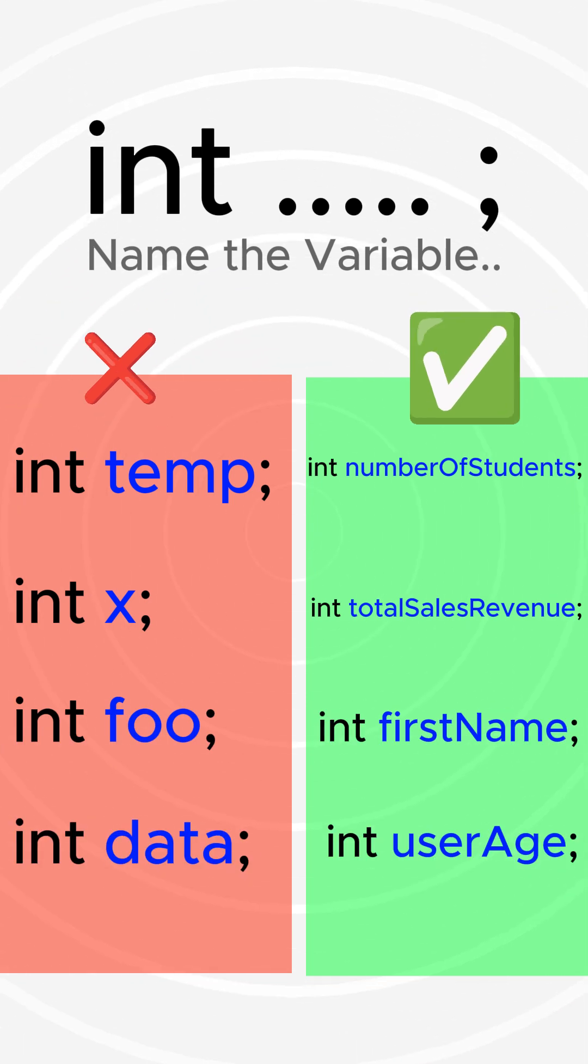Programmers struggle to name variables because they need to find a short and clear name that explains exactly what the variable does, making sure it is easy to understand for anyone reading the code.